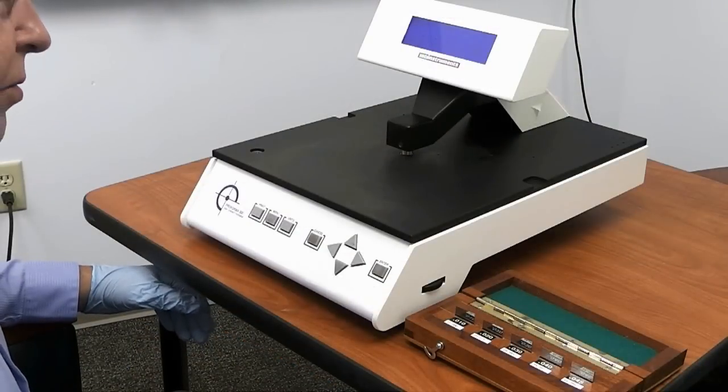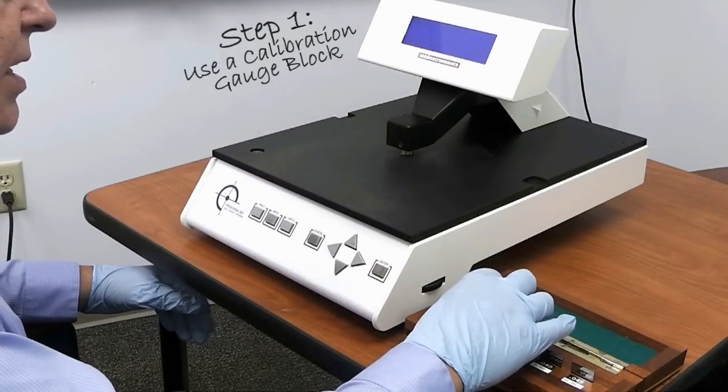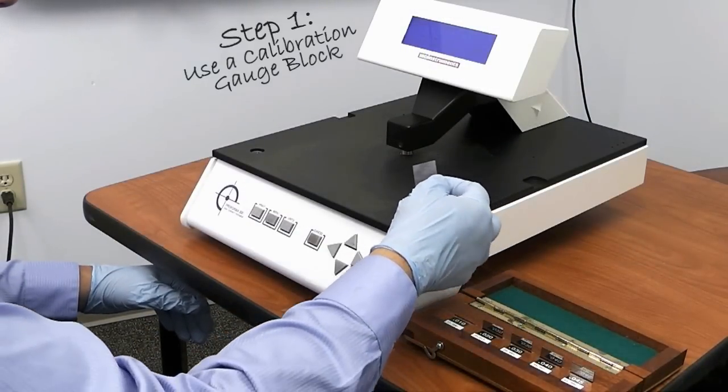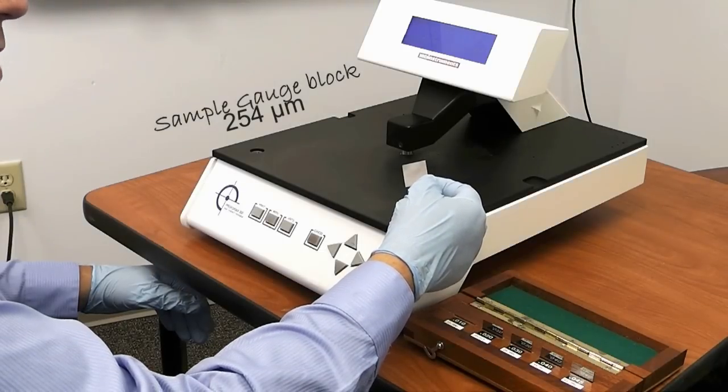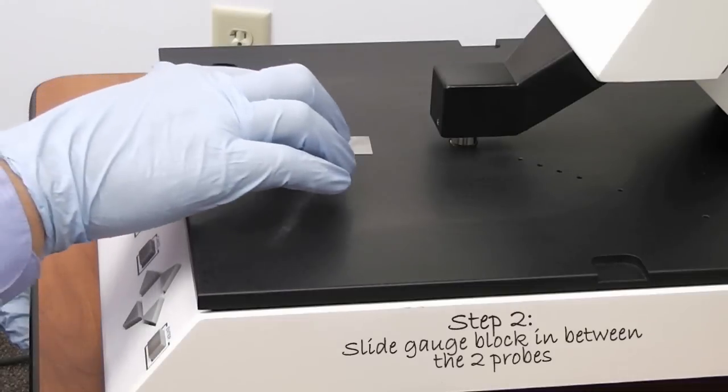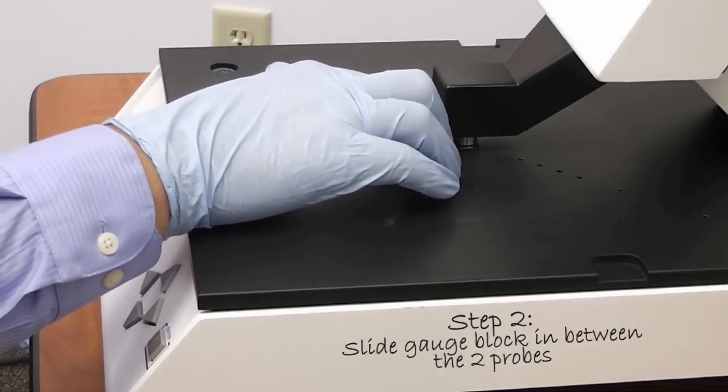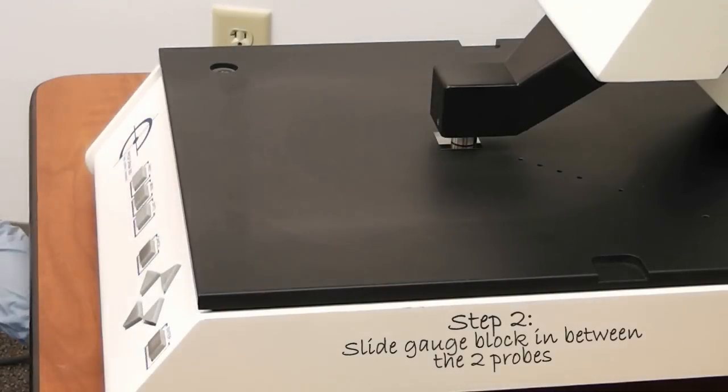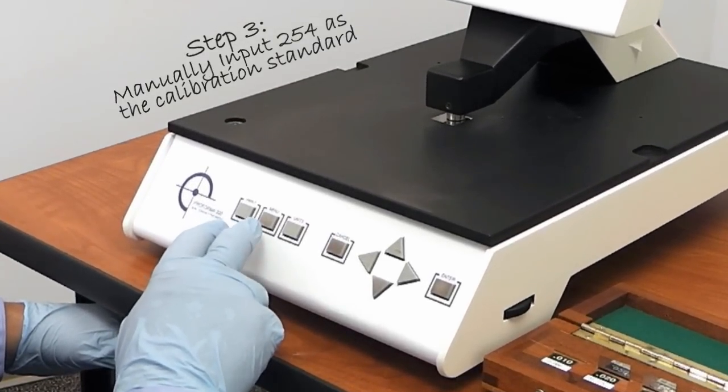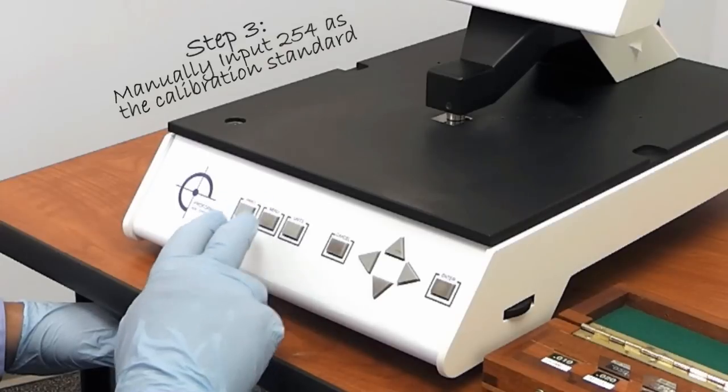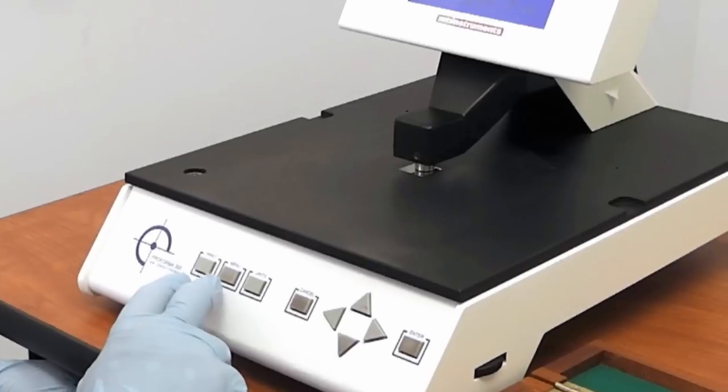The system is calibrated in three easy steps. First, we'll take a gauge block of known thickness and we have a gauge block here which is 254.0 microns thickness. We'll slide the gauge block underneath the sensor and place it evenly between the two probes.